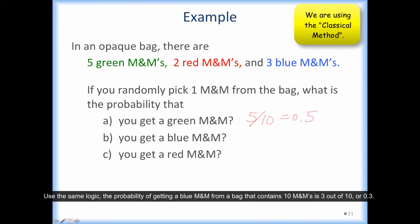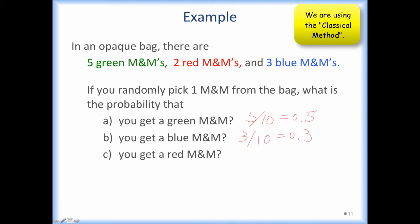Using the same logic, the probability of getting a blue M&M from a bag that contains 10 M&Ms is 3 out of 10, or 0.3. Similarly, when there are 10 M&Ms in the bag, and two of them are red, the probability of getting a red M&M is 2 out of 10, which is 20%.